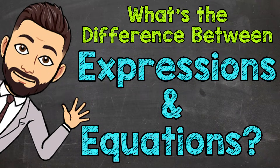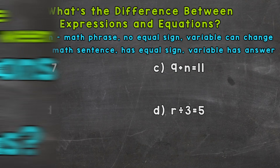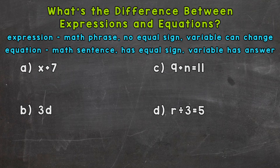Welcome to Math with Mr. J. In this video I'm going to cover what the difference is between expressions and equations. Let's jump right into it. We'll start with expressions. Expressions you can think of as math phrases — they are part of a full math sentence, only part. There is no equal sign and the variable can change values.